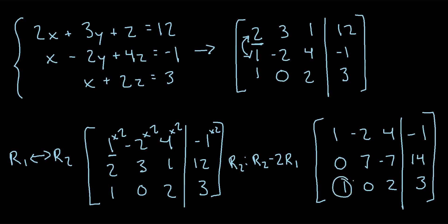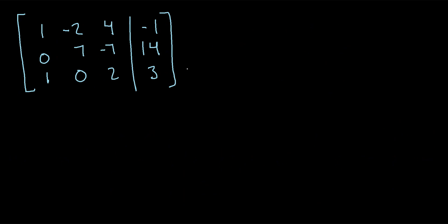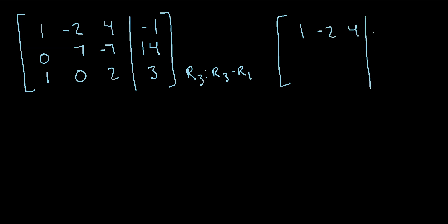Now we need to make the 1 in row 3's first column a 0. We can do row 3 minus row 1, since 1 minus 1 gives us 0. So row 3 becomes: 0, 2, negative 2, 4. Row 1 stays as: 1, negative 2, 4, negative 1; and row 2 stays as: 0, 7, negative 7, 14.